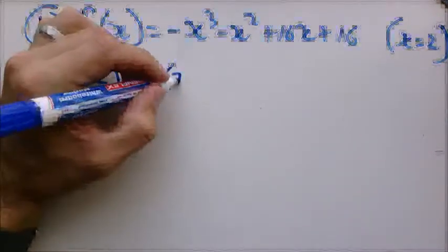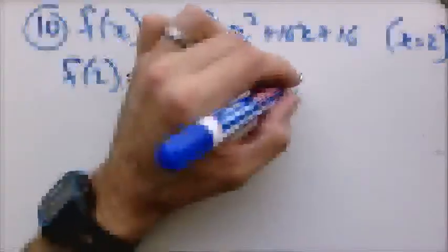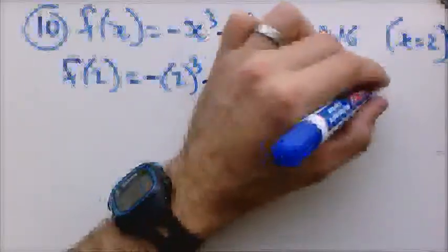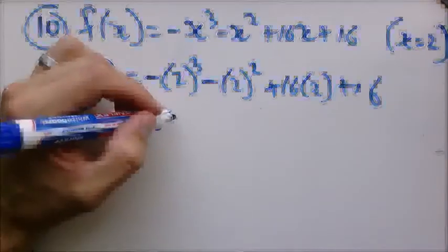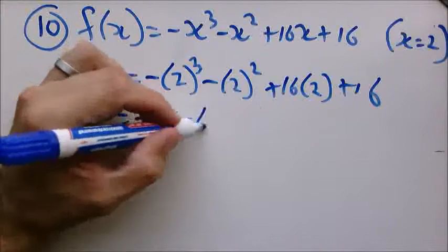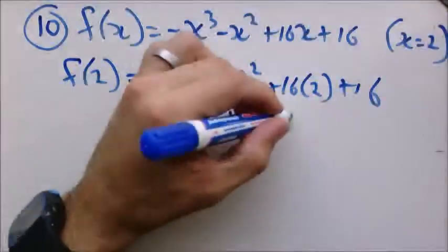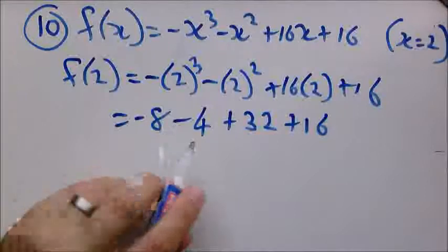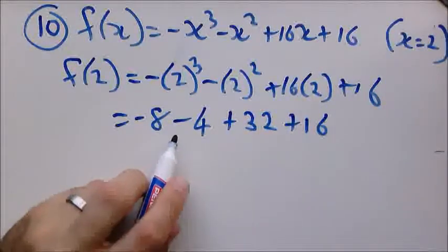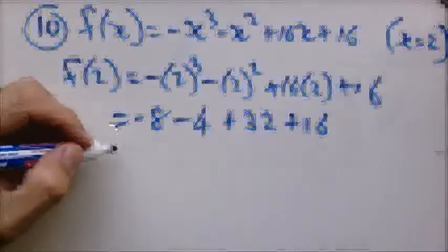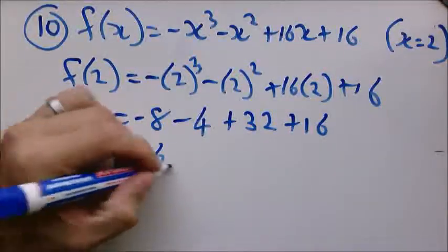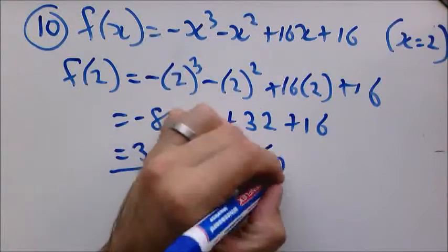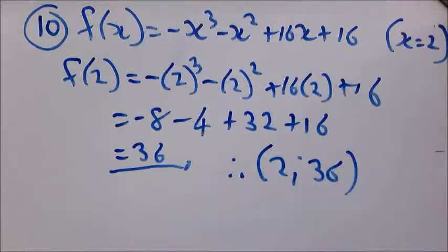Now you just substitute 2 into your equation. So this becomes negative 8 minus 4 plus 32 plus 16. So this becomes negative 12 plus 32 is 20 plus 16 is 36. So therefore we have our coordinate.